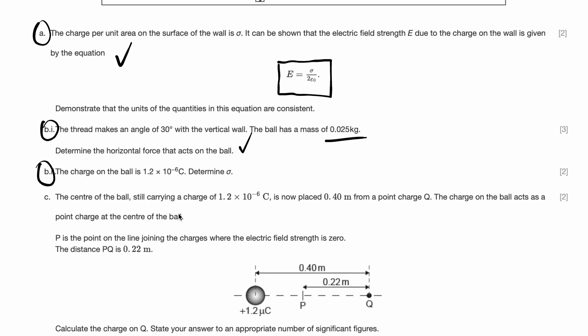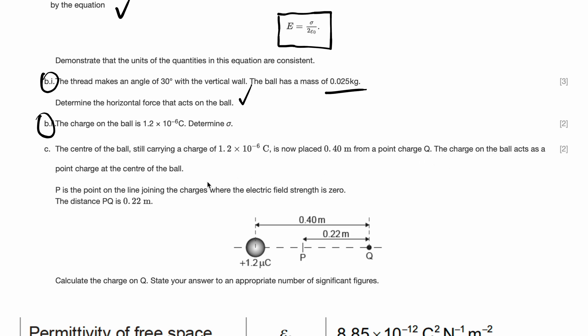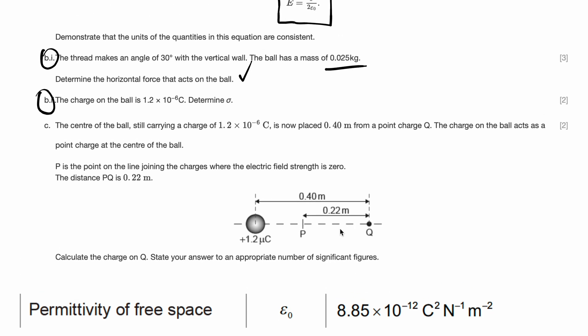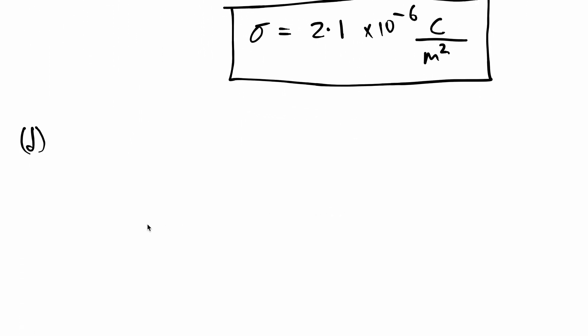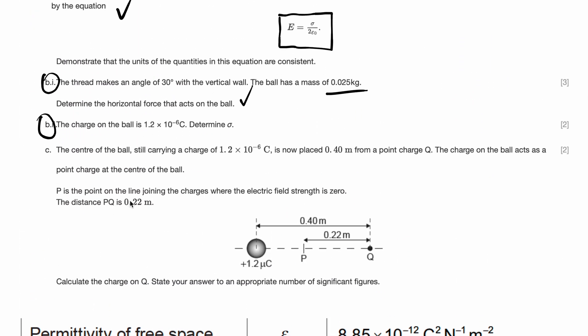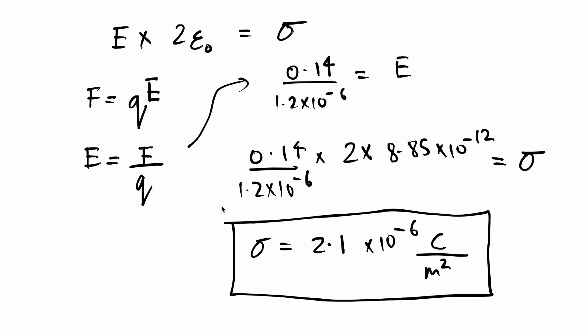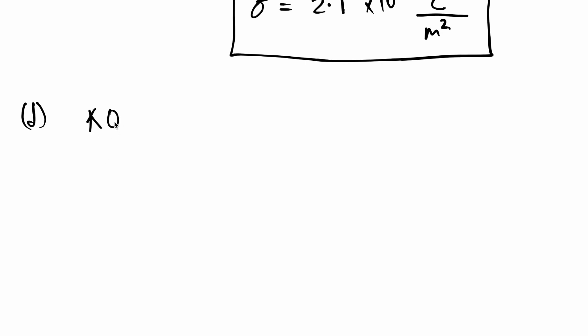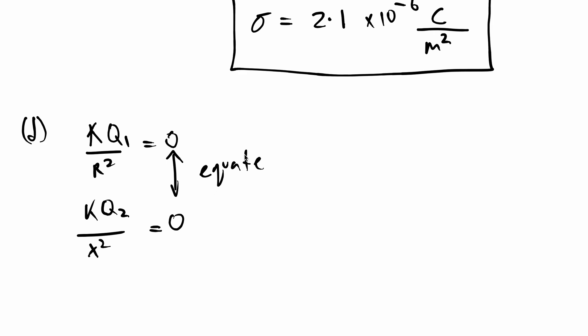The center of the ball still carrying a charge of 1.2 to 10 to the power of negative 6 is now placed 0.4 meter from a point charge Q. The charge on the ball acts as a point charge at the center of the ball. P is a point on the line joining the charges where electric field strength is 0. The distance PQ is 0.22 meter. Calculate the charge on Q. We need to calculate the charge on Q. We've done a similar question in the past. They're telling us that the electric field strength at some point in between the two charges is equal to 0. That means we can equate the two, meaning K times Q1 over R square is equal to K times Q2 over R square.